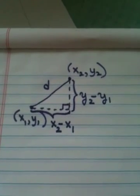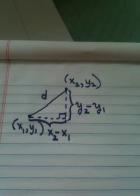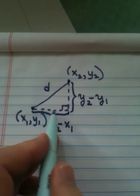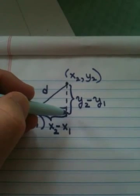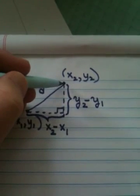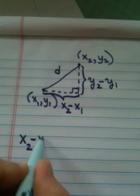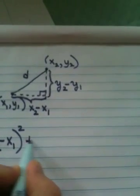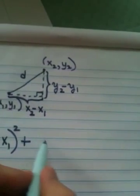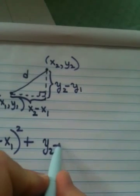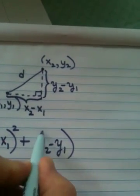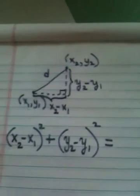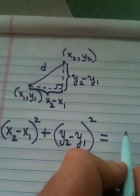And now what I'm going to do is apply the Pythagorean theorem. The length of one leg squared plus the length of the other leg squared is the length of the hypotenuse squared. x sub 2 minus x sub 1, that's one leg squared plus the other length of that leg, y sub 2 minus y sub 1 squared is equal to the hypotenuse squared.